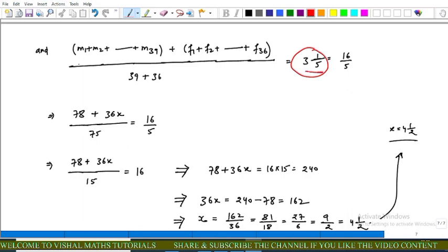We use simply arithmetic mean formula: sum of this meal eaten upon number of candidates which equals 39 plus 36. 3 1/5 is written as 16/5.